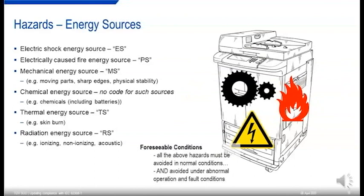Let's look at an example product — a photocopier. In the photocopier we've got mains high voltage for depositing toner, presenting a risk of electric shock. We've got fire hazards possibly from mains voltages, low voltage and high power circuits, and also fuels such as toner and paper within the product. There are mechanical hazards from moving parts rolling paper inside the equipment, and chemical, thermal, and radiation hazards — consider the toxicity of toner materials, overheating of motors, and the bright light used for scanning. All of these need to be safe in foreseeable conditions — avoided under normal conditions and under any abnormal operation or fault condition.